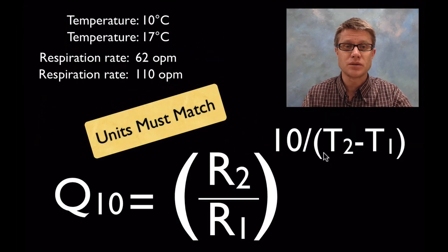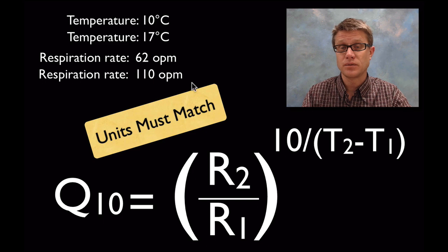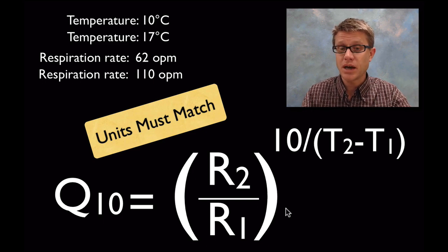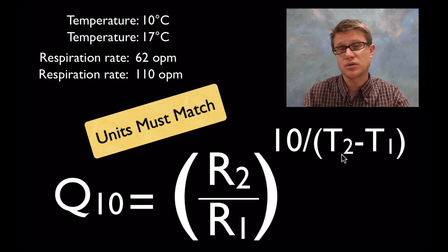So we've got two temperatures, T1 and T2. And then we have two rates, R1 and R2. And this is going to be the equation right here. So make sure that your units are going to match. But all you do is divide your second rate by your first. And then you're going to raise it to an exponent where we're subtracting T2 minus T1.